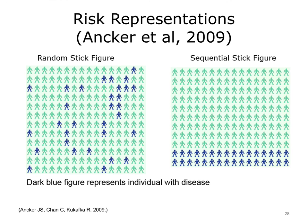Jessica Anker has conducted research pertaining to communicating risks to patients — for example, if you're 50 years old and smoke, what is your risk of having a heart attack over the next 10 years, and how does that differ from a non-smoker of the same age? Looking at two graphics: in the first, dark blue stick figures representing individuals with disease are randomly dispersed throughout a population; in the second, the dark blue stick figures are sequentially presented at the bottom of the screen. Although they represent the same probability, people are likely to interpret them differently. Dr. Anker has experimented with different dynamic and static representations to determine which ones work best for different populations.